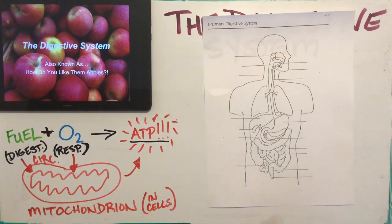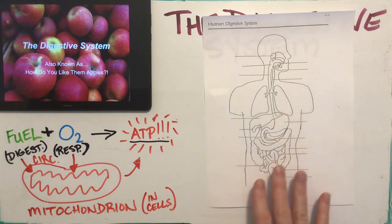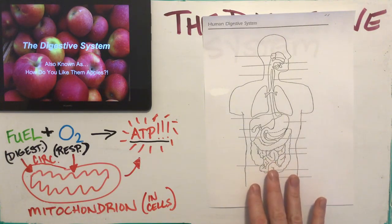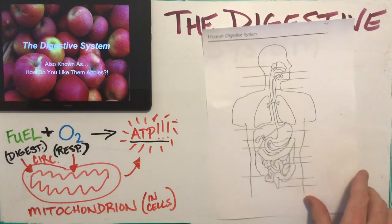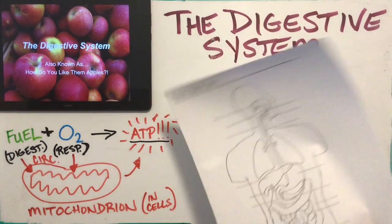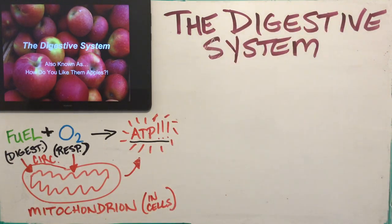I also put a diagram of the human digestive system up on our Edsby page today. I'm going to label this diagram after tomorrow's lecture on the accessory organs, since we have digestive system organs as well as accessory organs of digestion. Print that off if you can; if not, at least store it to your computer or electronic files.